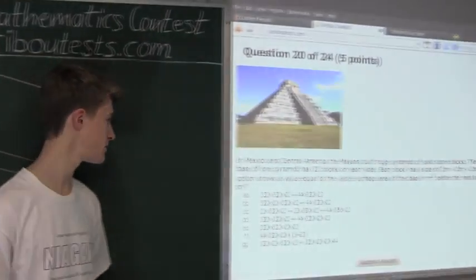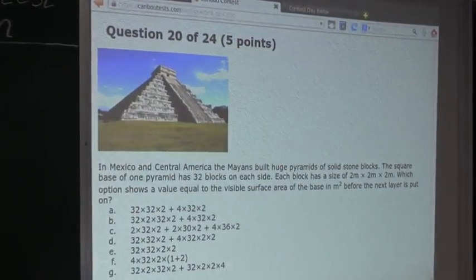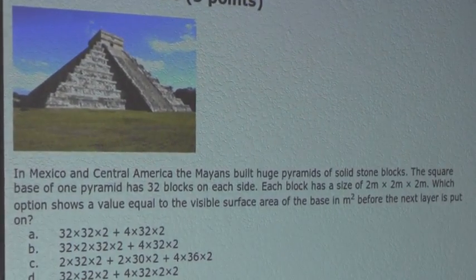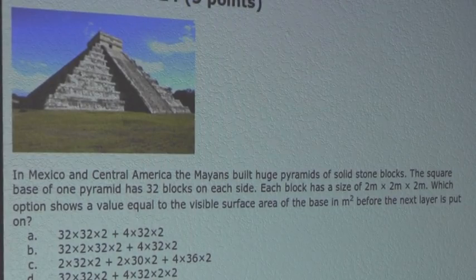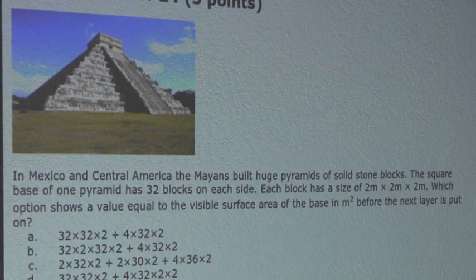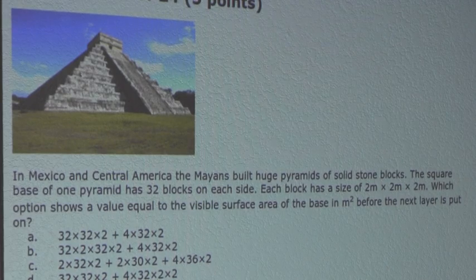Now the question is, in Mexico and Central America the Mayans built huge pyramids of solid stone blocks. The square base of one pyramid has 32 blocks on each side. Each block has a size of 2 meters by 2 meters by 2 meters.